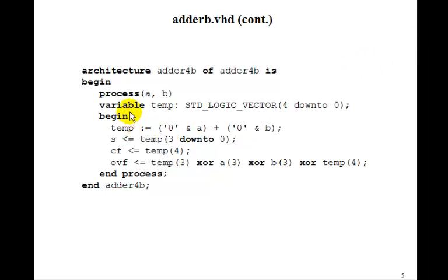So we define a variable temp, standard logic vector 4 down to 0. And then we define temp, and remember, colon equal for variables, is a 0 prepended to A and a 0 prepended to B.